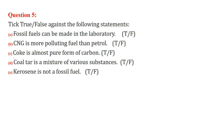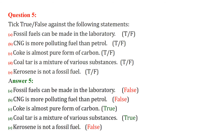Now we have to tick true and false. First: fossil fuels can be made in the laboratory — this is false, they cannot be made. Next: CNG is more polluting fuel than petrol — this is also false. CNG is actually a cleaner fuel than petrol.